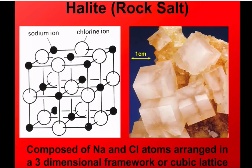An example of this that we're familiar with is halite, otherwise known as rock salt. Rock salt has a fairly simple chemical composition — it's a compound of sodium and chlorine. Its atomic structure is this very regular, cubic structure: one atom of sodium bonded with one atom of chlorine. That has an effect on its physical properties — the cubic crystals you can see on this photograph, for example.